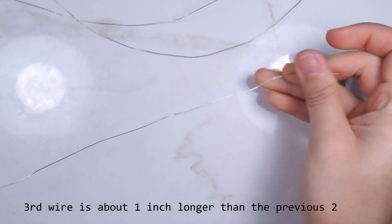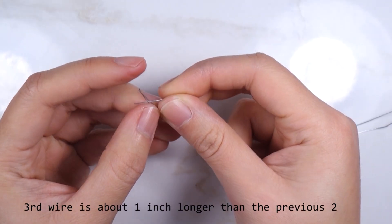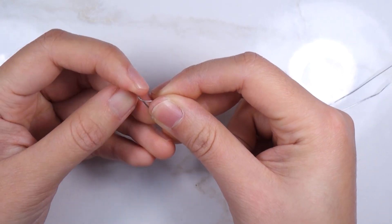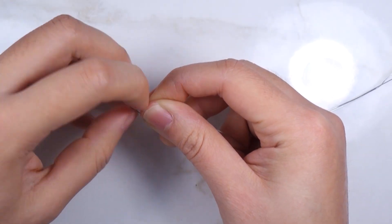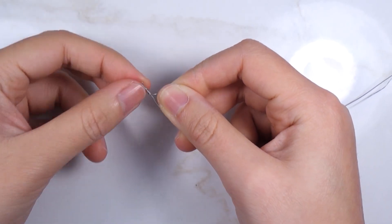Then cut one wire that is one inch longer than the previous two. Wrap the longest wire around the other two like so. I feel this will give the ring a vine-y look.